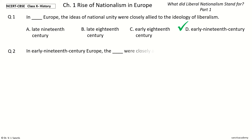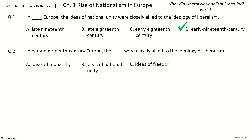Question 2. In early 19th century Europe, the dash were closely allied to the ideology of Liberalism. The options are: ideas of monarchy, ideas of national unity, ideas of freedom, ideas of abolition of aristocratic privileges.